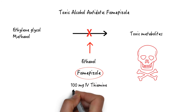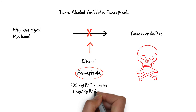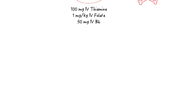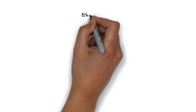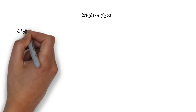In addition, the thiamine and folate provided for your patient, given his chronic alcohol abuse and poor nutritional status, along with vitamin B6, can also, in theory, reduce toxic metabolite concentrations. Let's talk about each of the three common toxic alcohol exposures, starting with ethylene glycol.